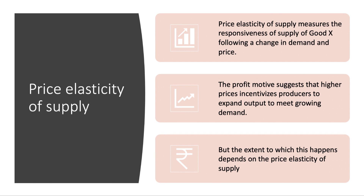If you've understood the price mechanism, you know that the profit motive suggests that higher prices incentivize and encourage producers to expand their production to meet growing demand. But the extent to which this happens depends on the price elasticity of supply. Equally, when prices and demand are going down, we look at the extent to which firms cut back on production.